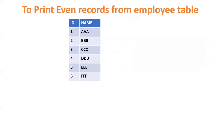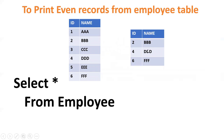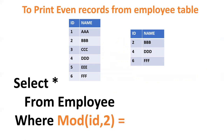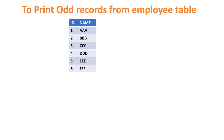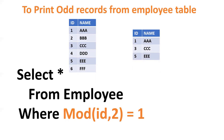Now, to print even numbers from a table: I want to print 2, 4, and 6. Using MOD functionality — WHERE MOD(id, 2) = 0 — because when the remainder of any even number divided by 2 equals 0, it is even. MOD(2,2)=0, MOD(4,2)=0, MOD(6,2)=0. Similarly, for odd numbers (1, 3, 5), use WHERE MOD(id, 2) = 1, since odd numbers give remainder 1. This is very important.